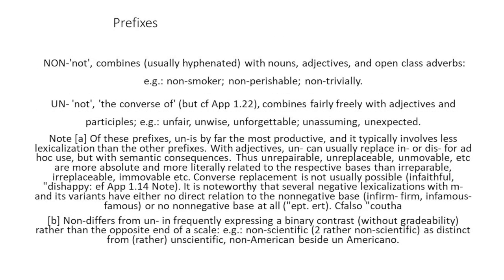'Non-' means not, combined — usually hyphenated — with nouns, adjectives, and open-class adverbs. For example: 'non-smoker,' 'non-perishable,' 'non-trivial.' 'Un-' means not or the converse of, combined fairly freely with adjectives and participles. For example: 'unfair,' 'unwise,' 'unforgettable,' 'unassuming,' 'unexpected.' Of these prefixes, 'un-' is by far the most productive and typically involves less lexicalization than the other prefixes.